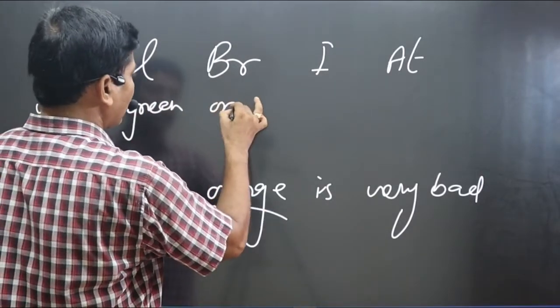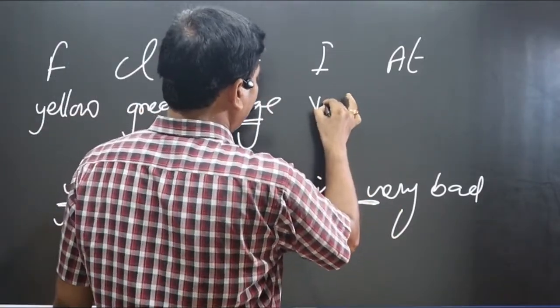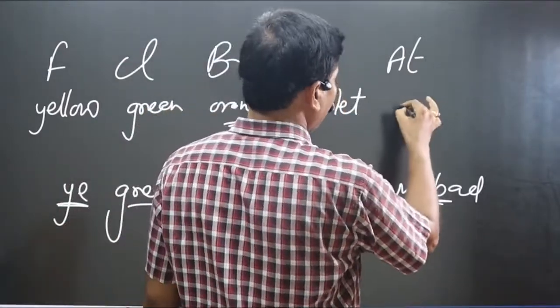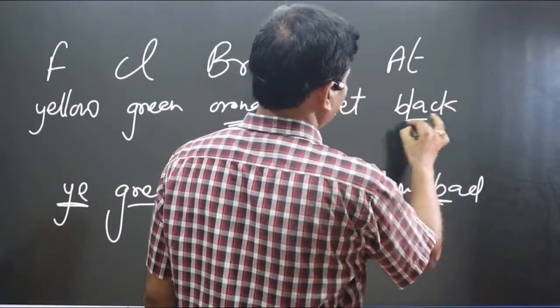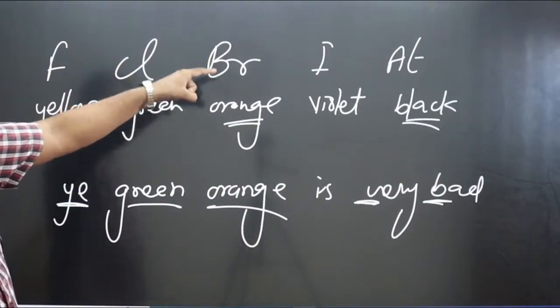V is standing for violet color for iodine, and B is standing for black color for astatine. So you can see: fluorine yellow, chlorine green, bromine orange, iodine violet, and astatine black.